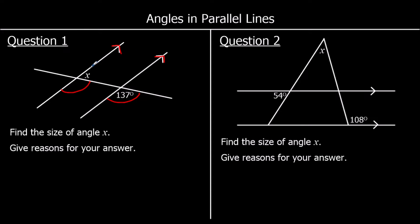We can also say that X is the same as this. These two green angles are corresponding angles, these two purple angles will be corresponding angles, and these two blue angles will be corresponding angles — the exact same angles where the line meets both of the parallel lines. So to answer this question, we could say that corresponding angles are equal, so that angle is 137.